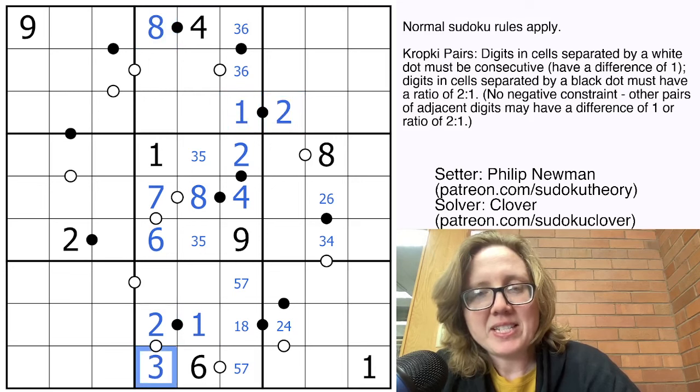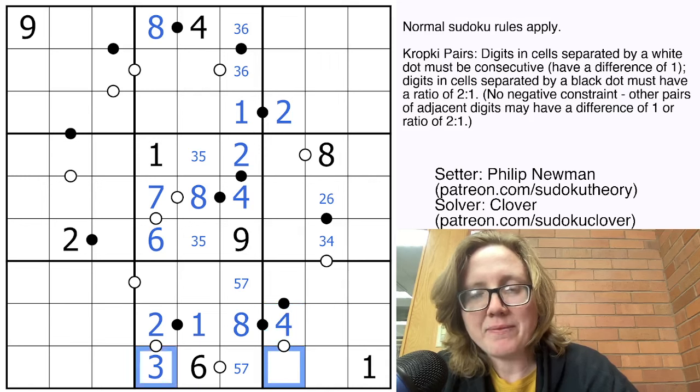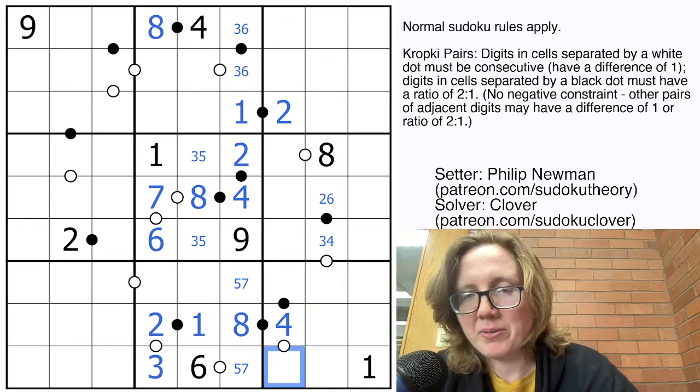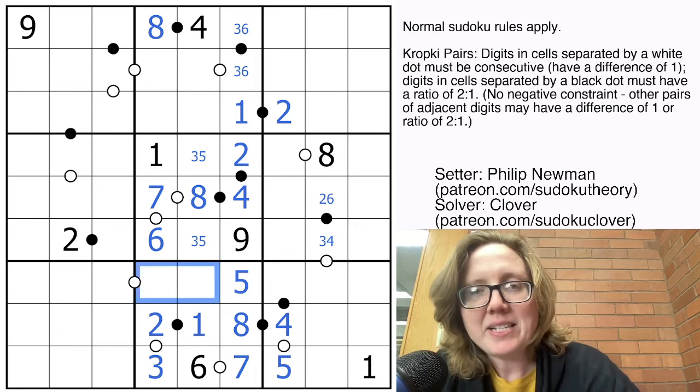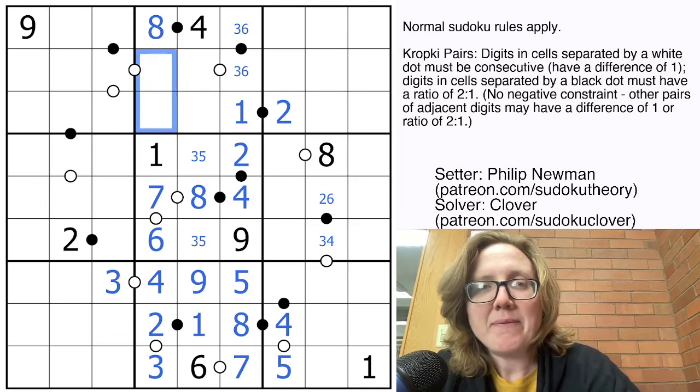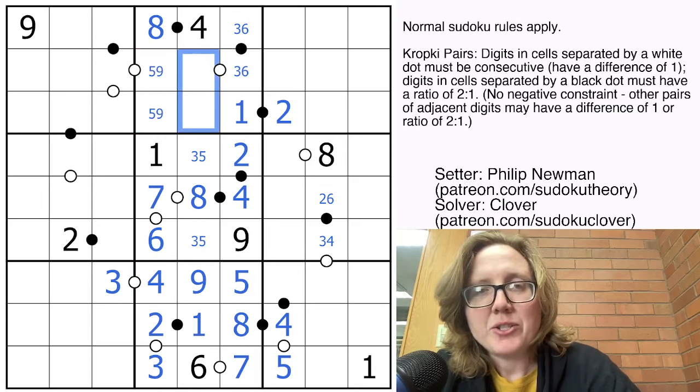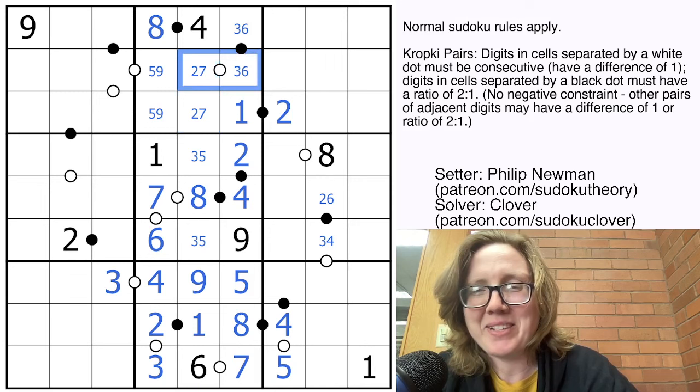Also, because we have consecutive digits, that's a 3, we can resolve our pencil mark there into an 8 with a 4. 4 is only consecutive to 3 and 5, and there's a 3 in the row already. So that's now a 5, that's a 7, and that is a 5. And these two digits are going to be 4 and 9 to finish the region. 4 is consecutive with 3 and 5, but we can't use 5, so let's place a 3 there.